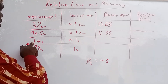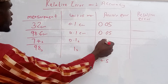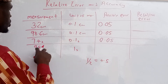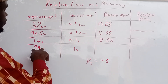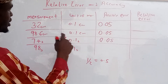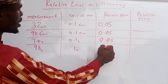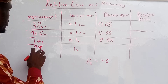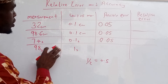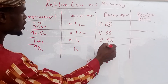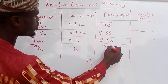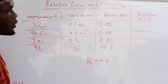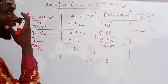For the third one, we have how many numbers after the decimal — one — so the possible error is 0.05. For the last one, 98, we don't have any number after the decimal point, so this equals our normal error, which is 0.5. That is how to find our possible error.